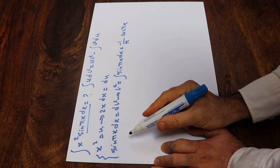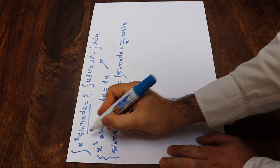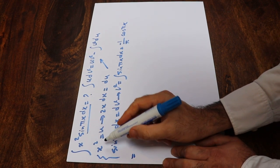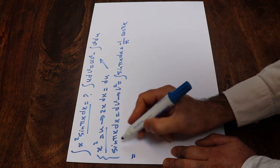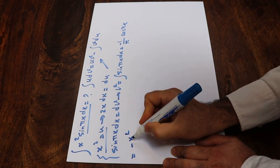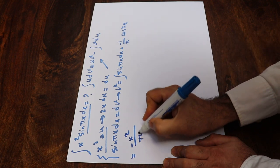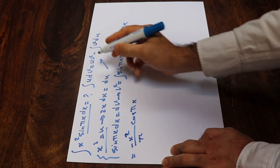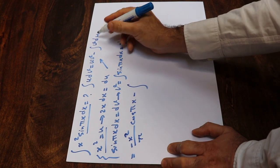So all you need to do here is substitute these terms into the formula. Therefore, this integral will be equal to u times v. Since v is this term, that will be equal to minus x² divided by π times cosine(πx) — that is uv — minus the integral of v du.